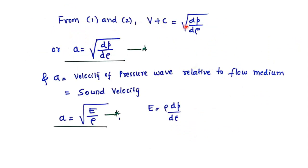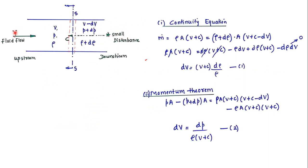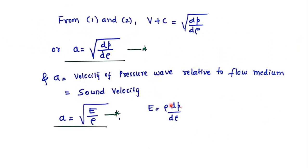Solving the two equations together, we get v + c equal to the square root of dp/dρ. Here, v + c is replaced by a, which is the relative velocity of sound with respect to the fluid flow. If fluid velocity v is zero — meaning the fluid is stagnant — then a equals c. From fluid properties, dp/dρ can be replaced using the bulk modulus E, giving: a equals square root of E/ρ. This is the velocity of sound, which depends on the bulk modulus.